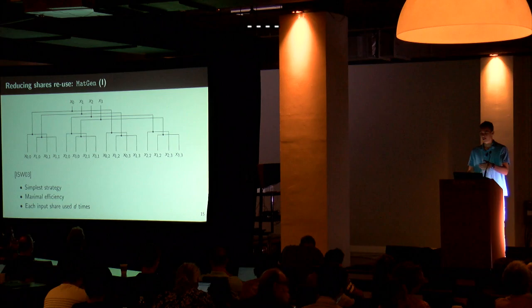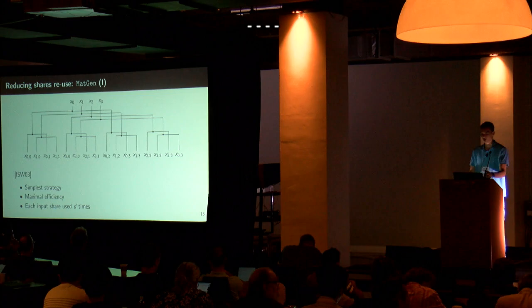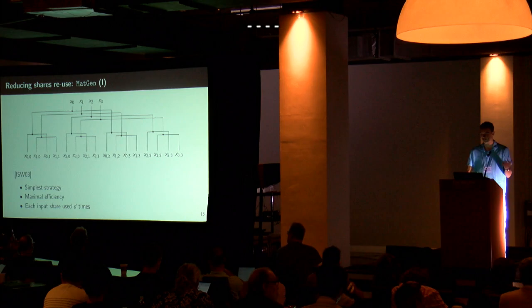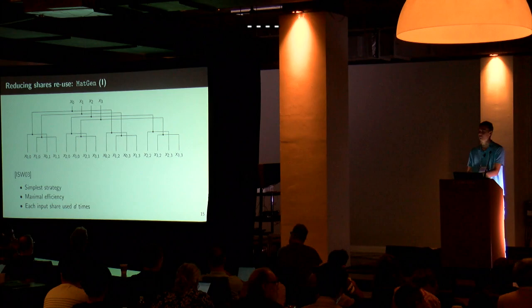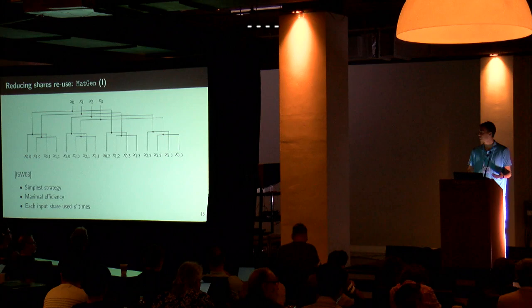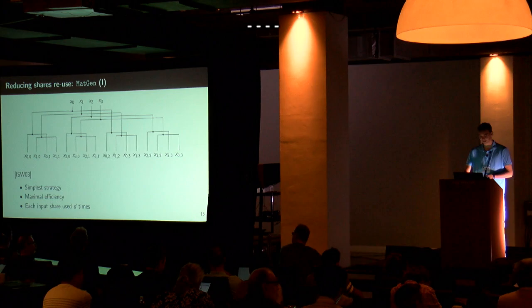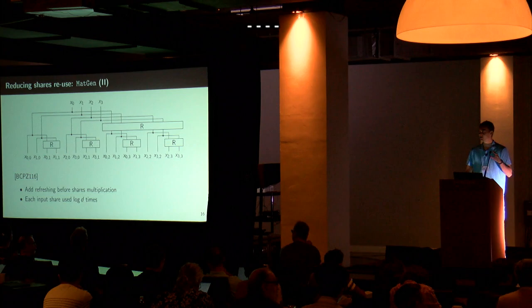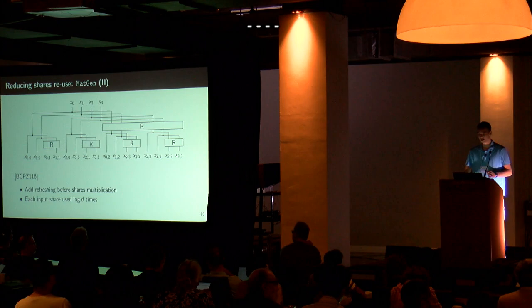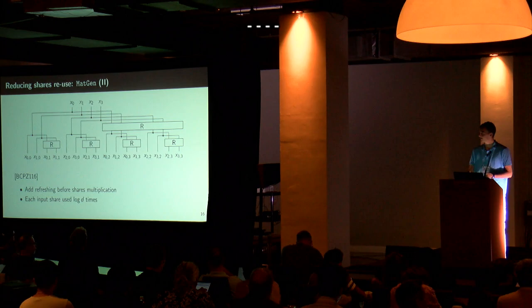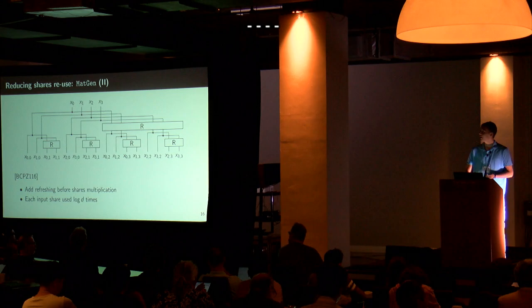We look at the matrix generation stage. At the top we have the inputs and at the bottom the outputs. For ISW, we simply replicate the data with no operations — this is extremely cheap — but each input share is used D times, meaning you link a lot of information about it. To reduce this, the idea from Battistello and co-authors was to add refresh. If done properly, you preserve the functionality of the gadget while adding randomness, making it much harder to recover the data. Each input share is used at most log D times instead of D times, hopefully increasing security.